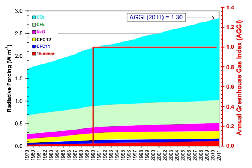Aside from purely human-produced synthetic halocarbons, most greenhouse gases have both natural and human-caused sources. During the pre-industrial Holocene, concentrations of existing gases were roughly constant, because the large natural sources and sinks roughly balanced. In the industrial era, human activities have added greenhouse gases to the atmosphere, mainly through the burning of fossil fuels and clearing of forests.